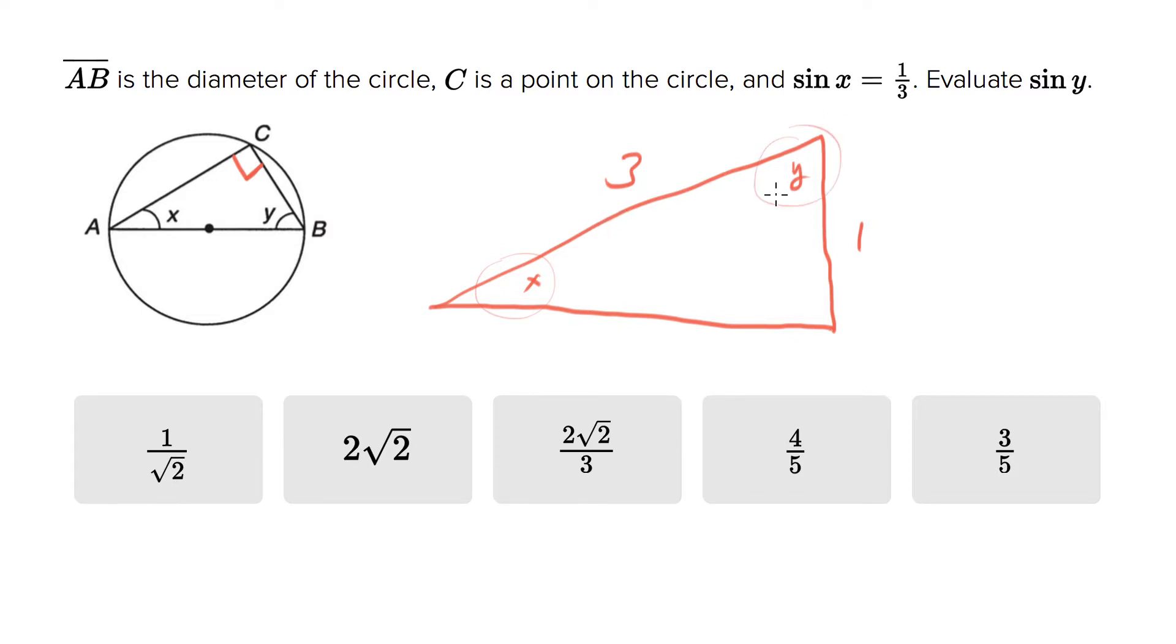sin y. So sin x is opposite over hypotenuse—that's one way you can think of it, or the ratio of the sides opposite and hypotenuse for that angle. Sin y also has that same concept, except we have a different opposite. We want the opposite from y over the hypotenuse, so we don't know